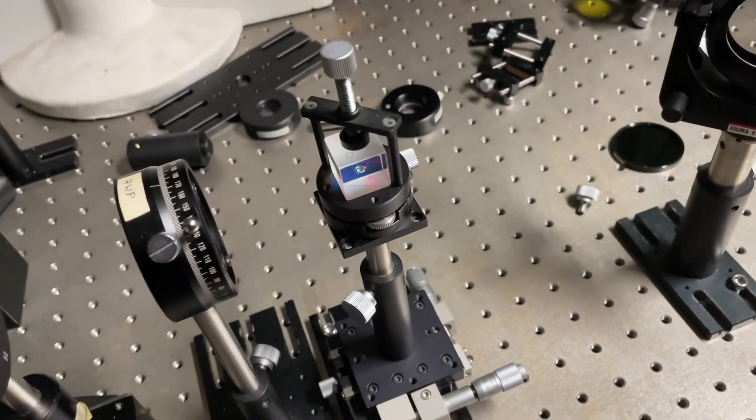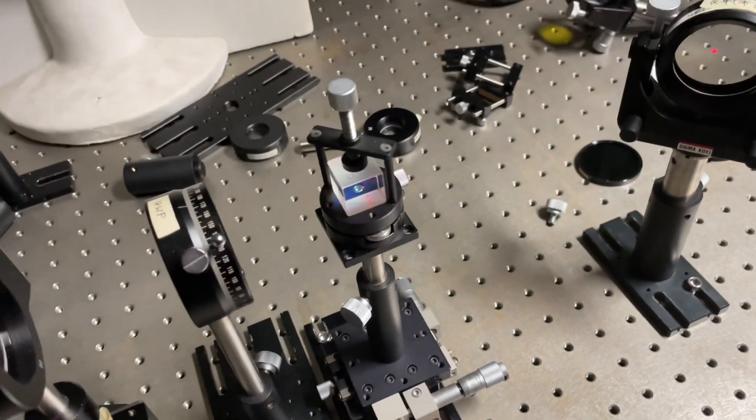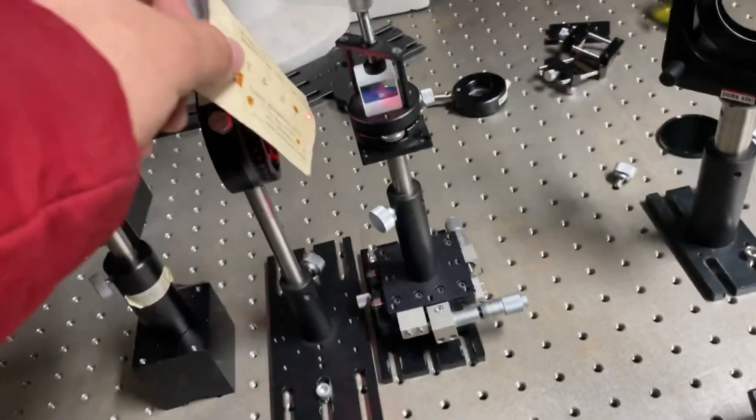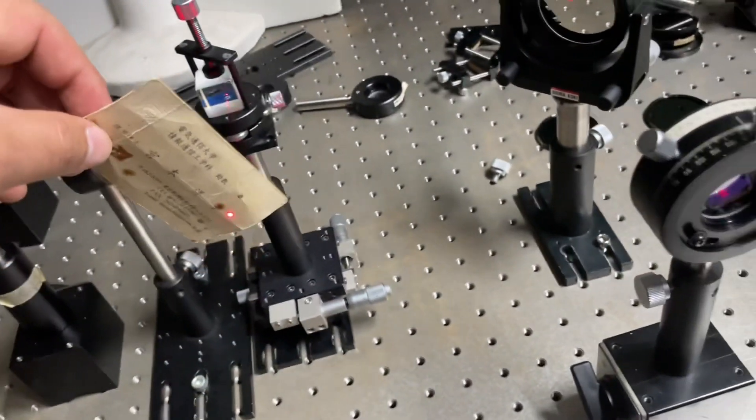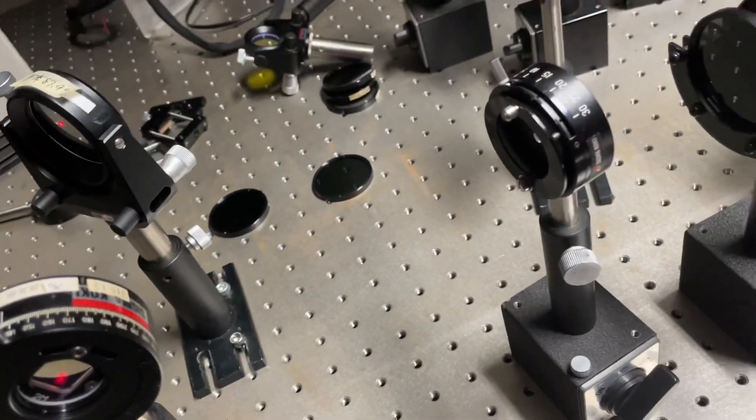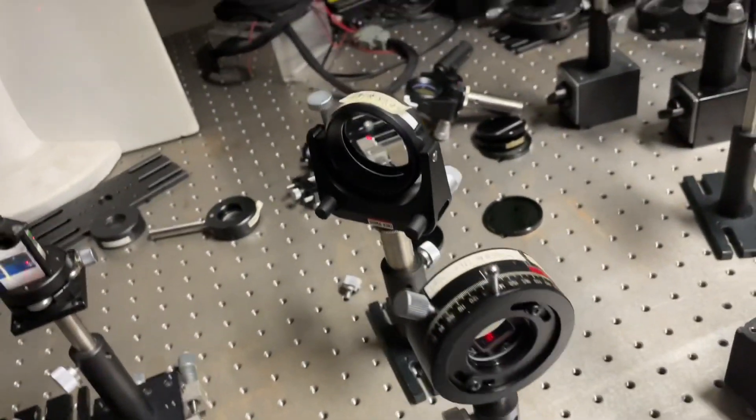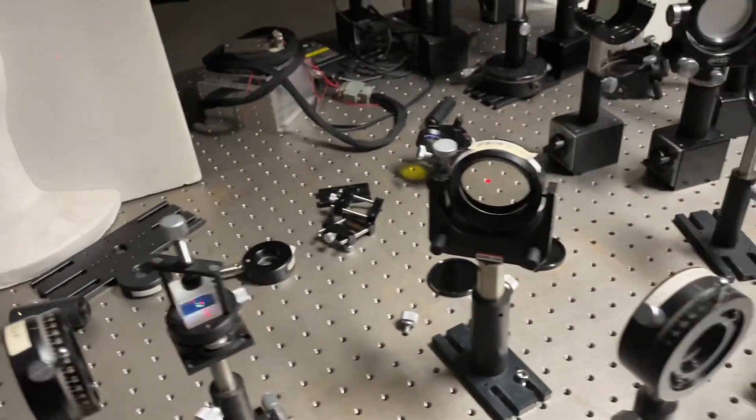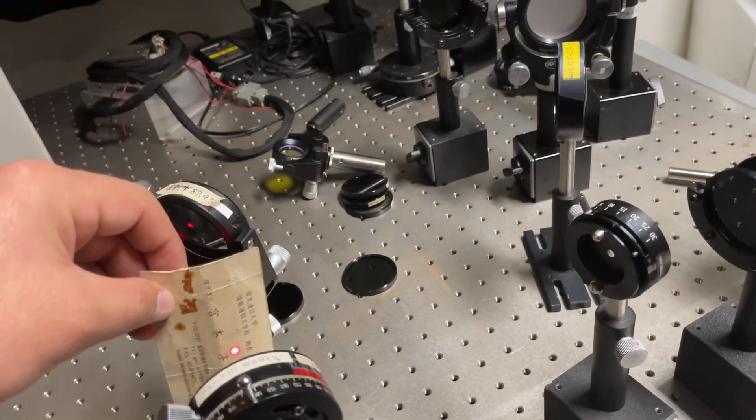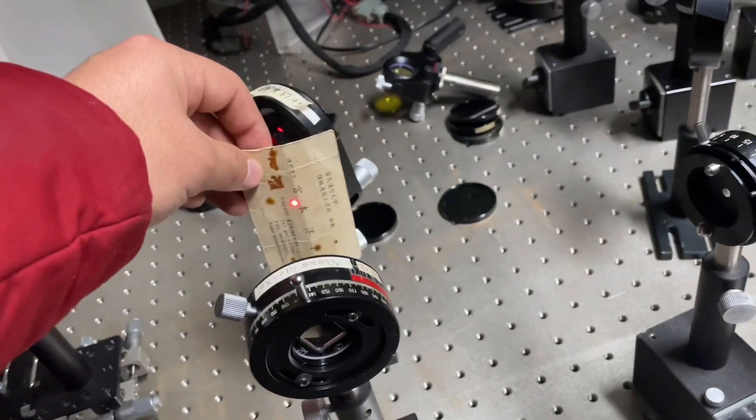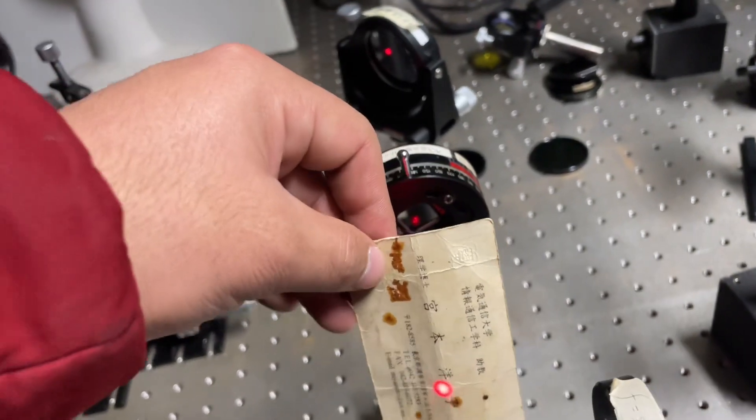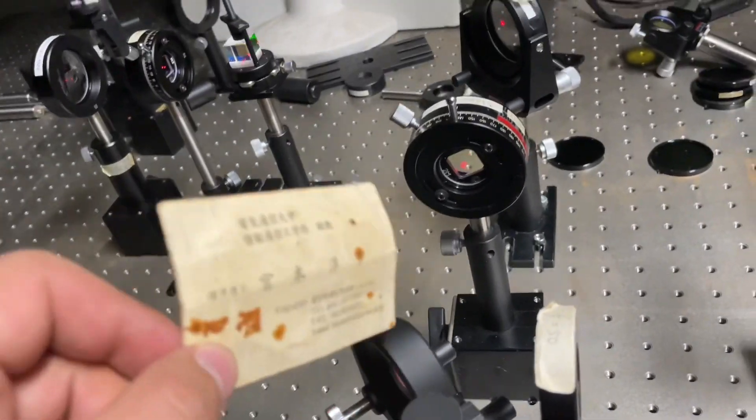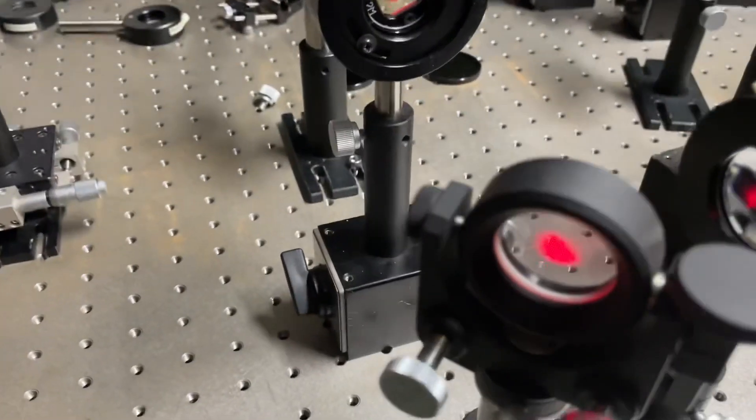When it strikes the polarizing beam splitter, the p-polarized beam transmits and the s-polarized beam reflects. When we merge them on the second beam splitter, you will have an interference effect on the screen.